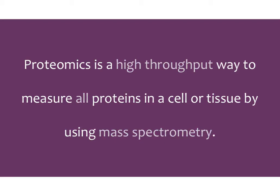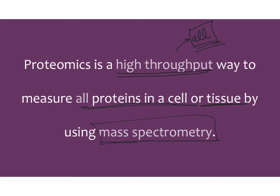Proteomics is an extremely high-throughput way to look at all the proteins in a cell or tissue — not just one or two. There are other ways to measure just one or two proteins, but proteomics is our way to measure all proteins in the cell. The technology it uses is called mass spectrometry. If you are interested in an experiment where you want to unbiasedly measure every single protein in a certain condition, proteomics is going to be your go-to.